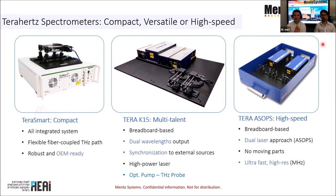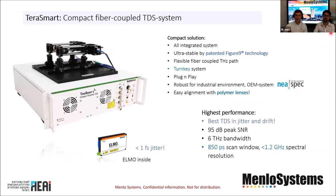This dual-laser system — called ASOPS — achieves much faster scan rates and higher spectral resolution, because there is an inverse relationship between scan path length and the finest spectral resolution achievable. The TerraSmart is a turnkey system with software, hardware, and all electronics needed for terahertz spectroscopy. Two key parameters are the dynamic range — essentially the signal-to-noise ratio — and the bandwidth, meaning how many terahertz frequencies can be measured.